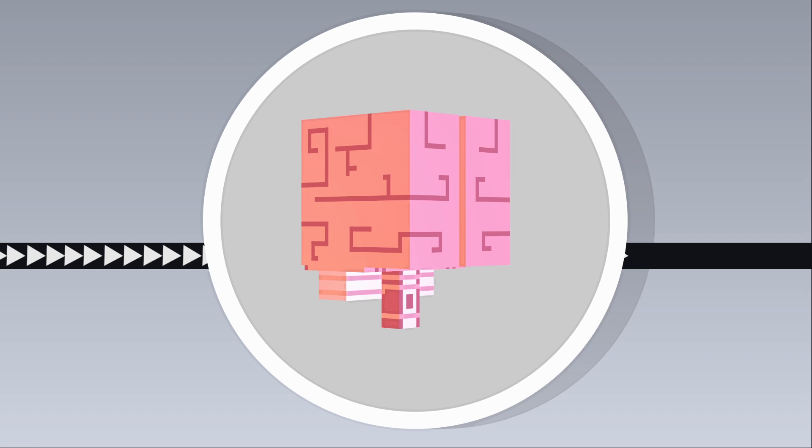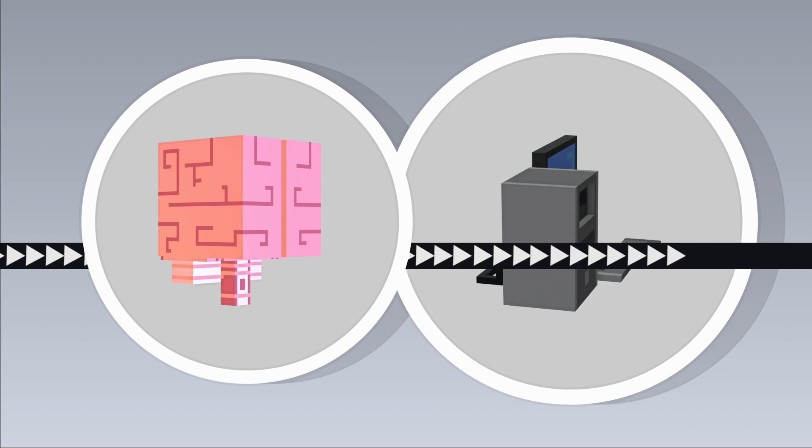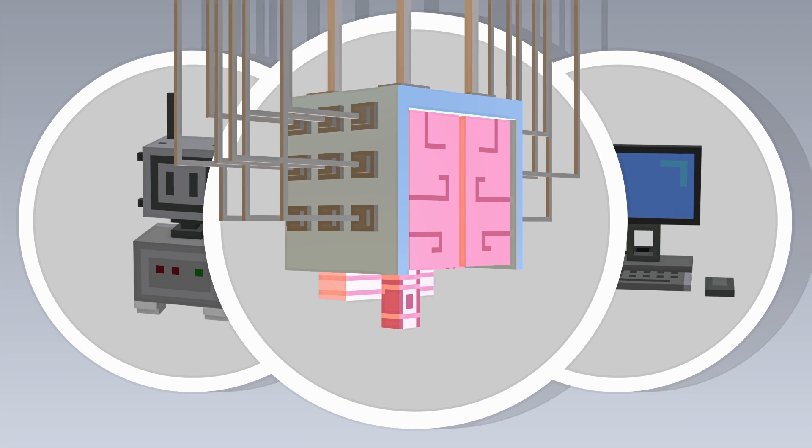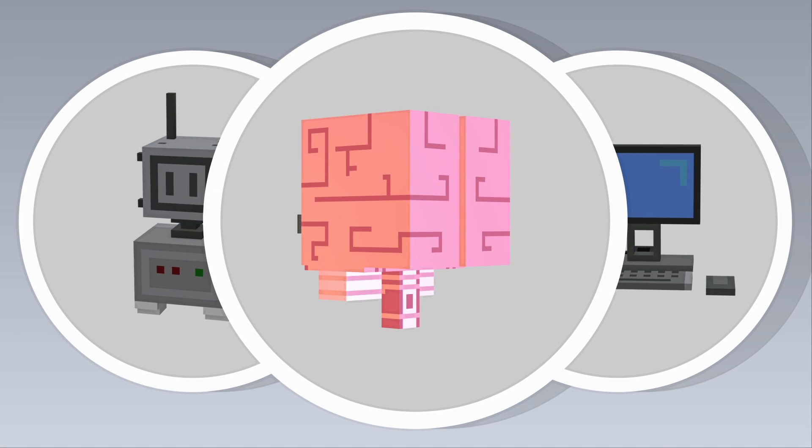A brain-to-machine interface is a system that allows a brain to directly communicate with a robot or computer. A necessary part of a brain-to-machine interface is an external EEG or, for a more advanced connection, a brain implant.